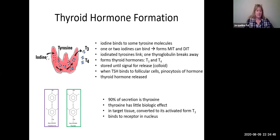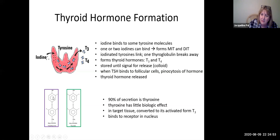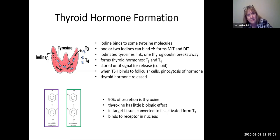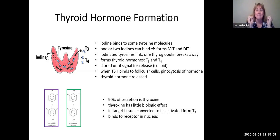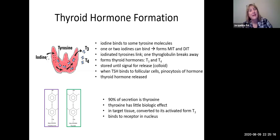Interestingly, thyroxine has very little biological effect on its own. It travels to its target tissues where it's then converted to T3, which binds to a receptor in the nucleus. You might say — wait, these are made from the amino acid tyrosine, making them protein-based hormones, so why is the receptor in the nucleus? That only happens with lipid-based hormones. That's the big conundrum: thyroid hormones decided to break all the rules. Yes, they are peptide-based hormones, but they act like steroid-based hormones — playing both sides of the field.